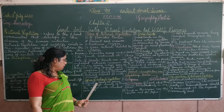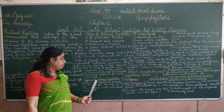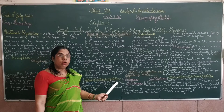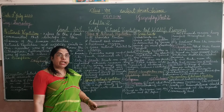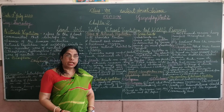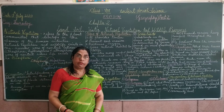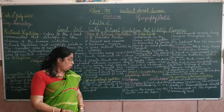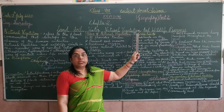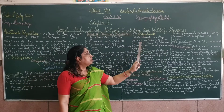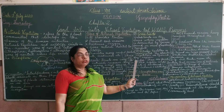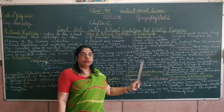The next topic is types of natural vegetation. What are the types of natural vegetation? There are four types: one, forest; two, grasslands; three, scrubs; and four, tundra.